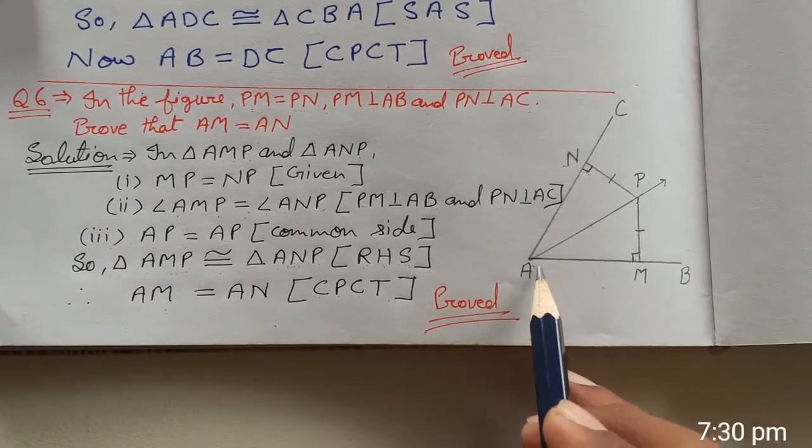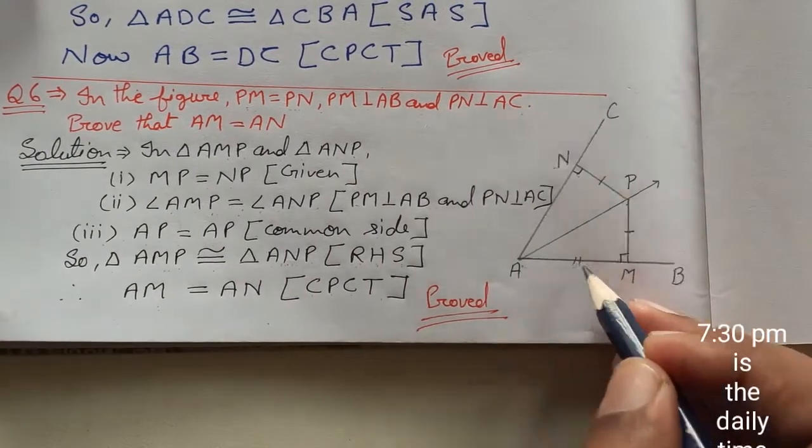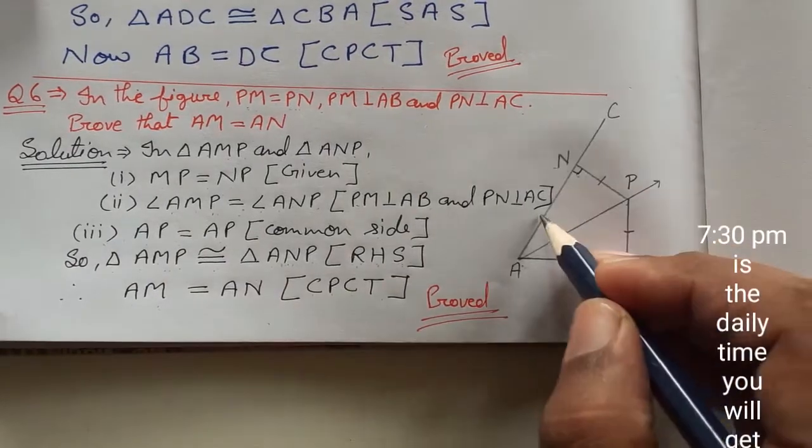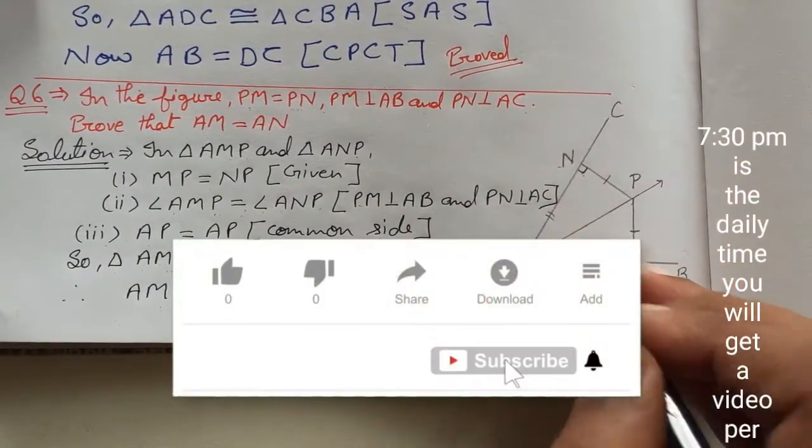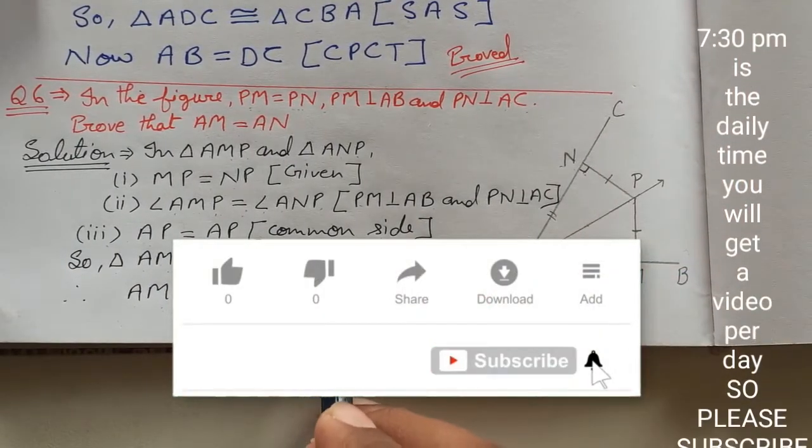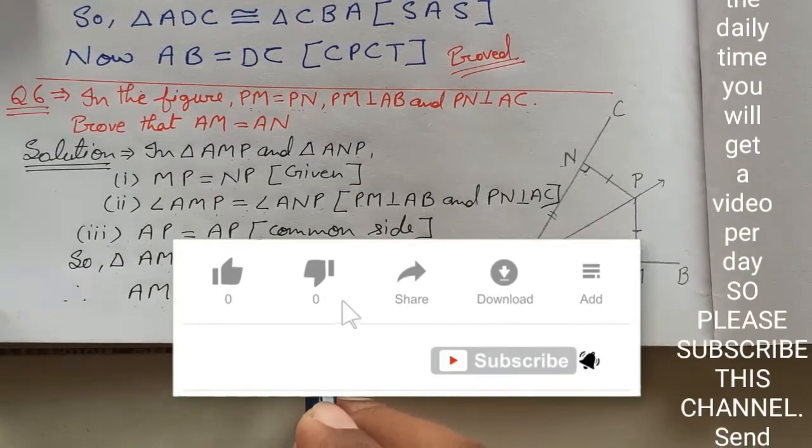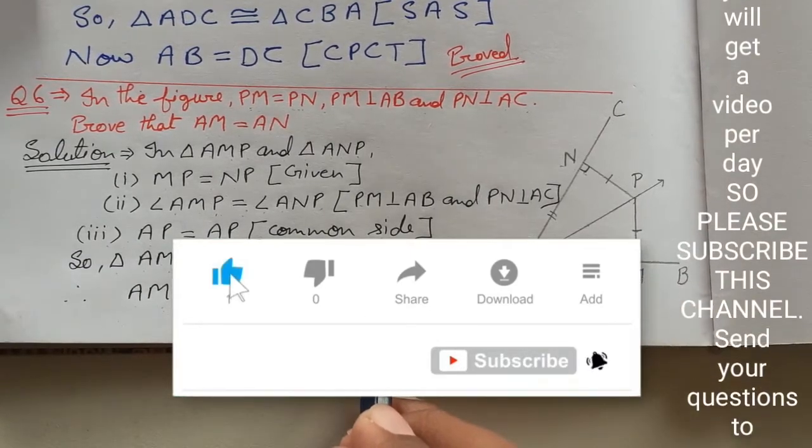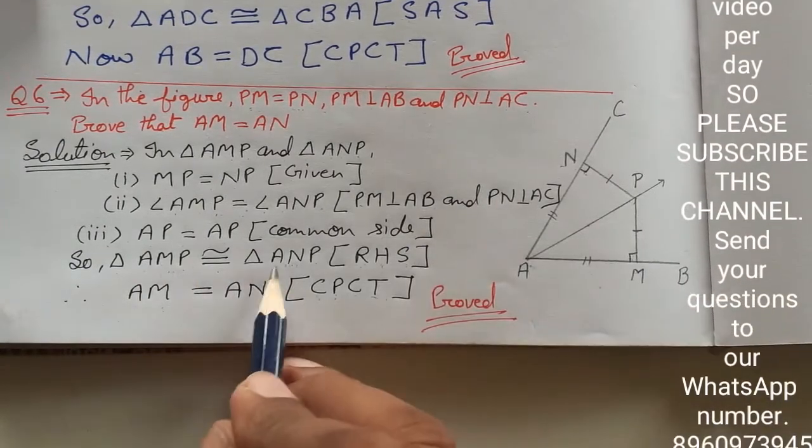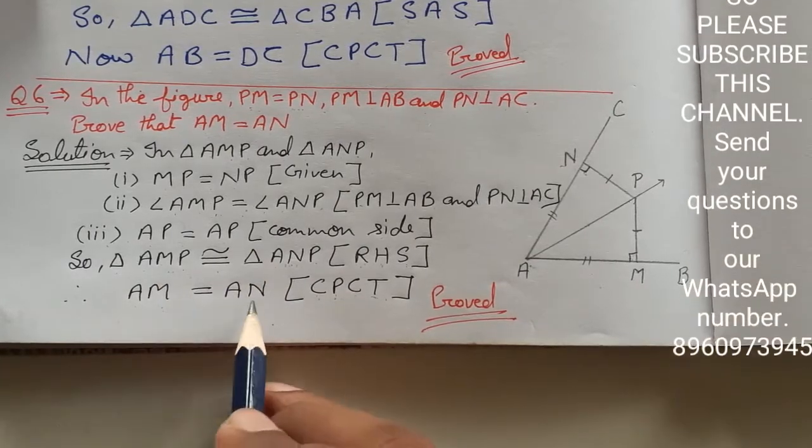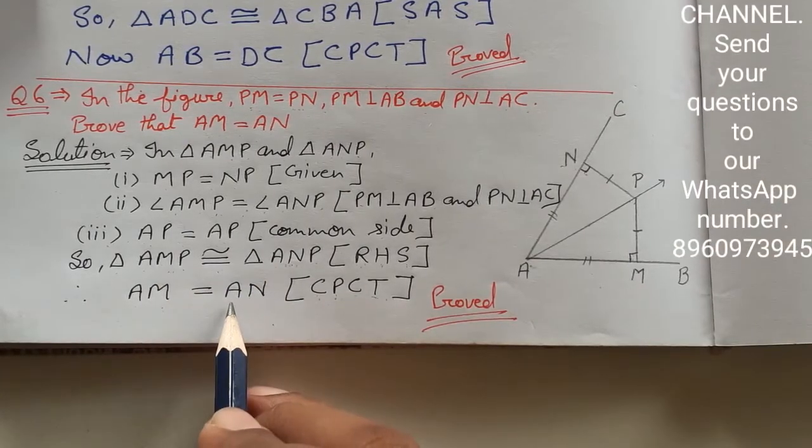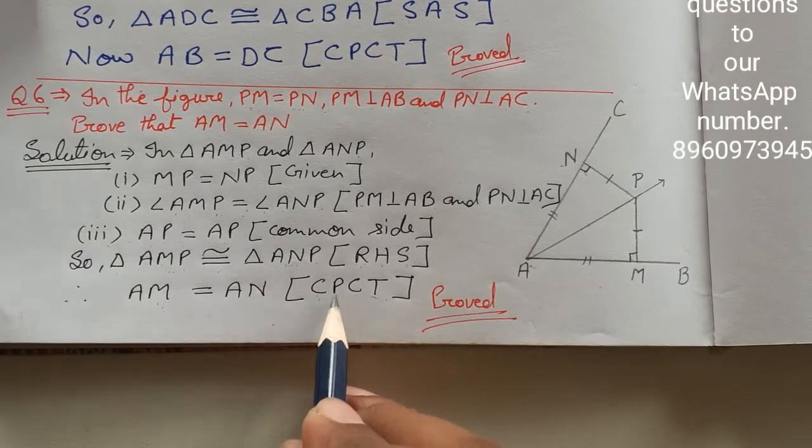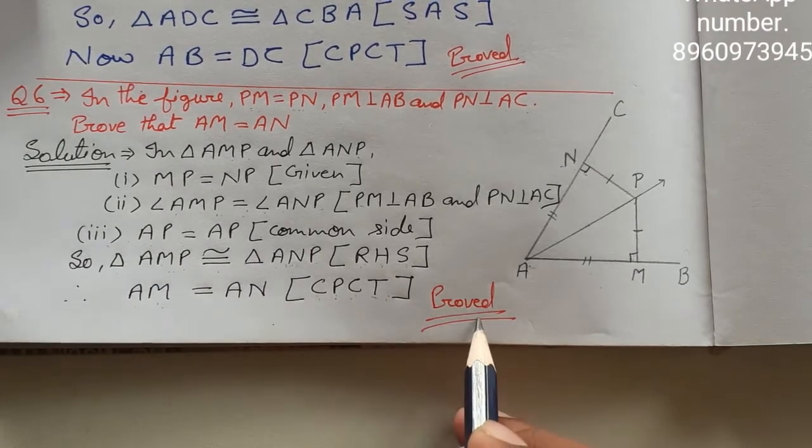तो देखिए AM, यह जो side थी, इसकी AM यह side equal हो जाएगी AN के। और इसकी जो property लिखेंगे, वो लिखेंगे CPCT। CPCT means corresponding parts of congruent triangles. यह दोनों congruent triangles थे, तो उनके जो corresponding remaining parts होंगे, वो भी equal होंगे। इसलिए AM equals AN, CPCT से equal हो जाएगा and it is proved here.